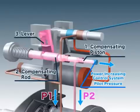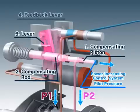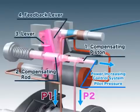As the compensating rod moves, the lever rotates, moving the feedback lever, which in turn moves the spool.